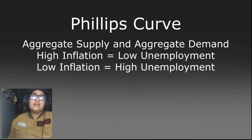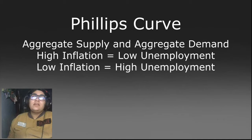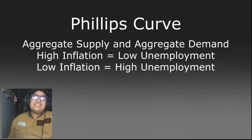Focusing on the Phillips curve, we have to look at the aggregate supply, the aggregate demand, and movements or shifts. There's high inflation that equals low unemployment, and low inflation that equals high unemployment — so they are very opposite.